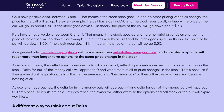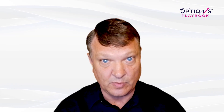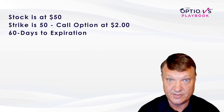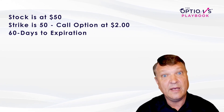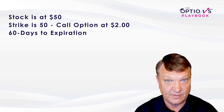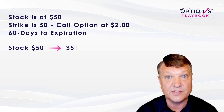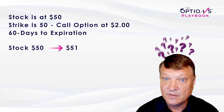On optionsplaybook.com there's an example using a stock trading at $50 with a strike of $50 — an at-the-money call option with 60 days remaining. We pay $2 for that option contract. As soon as we buy it, the stock moves up to $51. What is my $2 option contract now trading for?